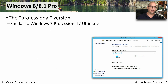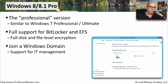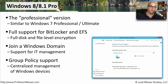The version of Windows 8 you might find in a business is Windows 8 Pro, which is very similar to Windows 7 Professional or Windows 7 Ultimate. It includes full support for full disk encryption with BitLocker, or individual file encryption with the Encrypting File System. This Pro edition can also be configured to join a Windows Active Directory domain, so your IT team can centrally manage all Windows 8 devices using Group Policy.